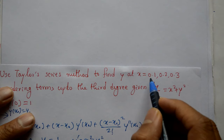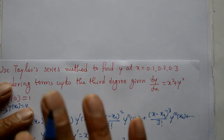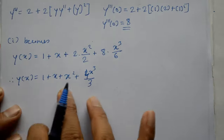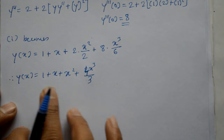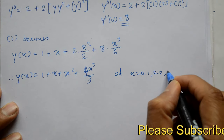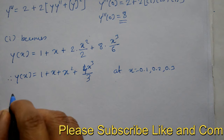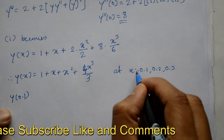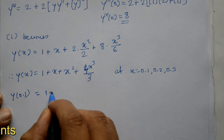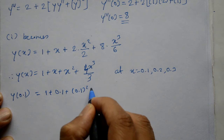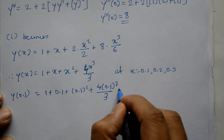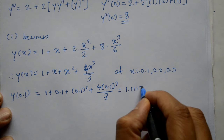Find the value of y at x = 0.1, 0.2, 0.3 — x ke jagah mein values daalna hai. Put x = 0.1: y(0.1) = 1 + 0.1 + (0.1)² + 4·(0.1)³/3 = 1.1113. Take x = 0.2: y(0.2) = 1 + 0.2 + (0.2)² + 4·(0.2)³/3 = 1.2507.